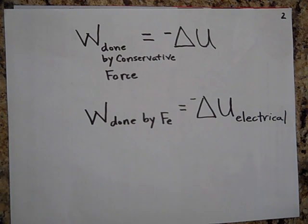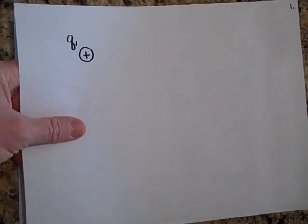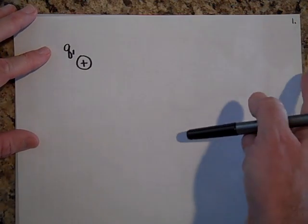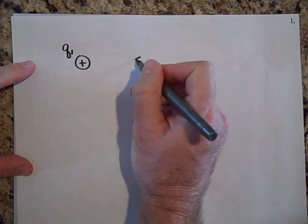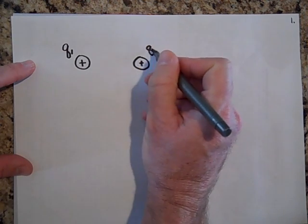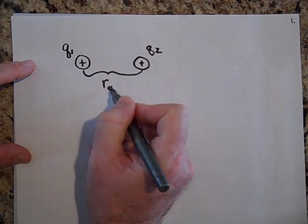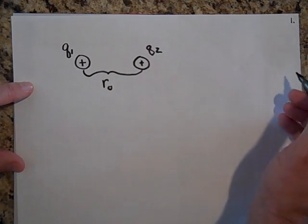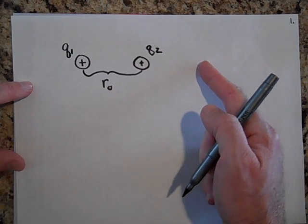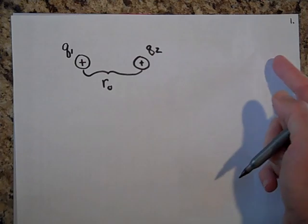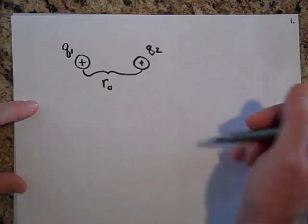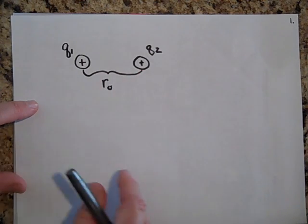Let's calculate what that would be. We have a positive charge here, and we want to bring a charge Q2 from infinity all the way to a distance R0 from it. That's going to take some work — the electrical force is going to do some work, and let's calculate how much. I'm going to move Q2 in with my own force; it won't want to go there by itself. But it's the work done by the electric force that I want to calculate.